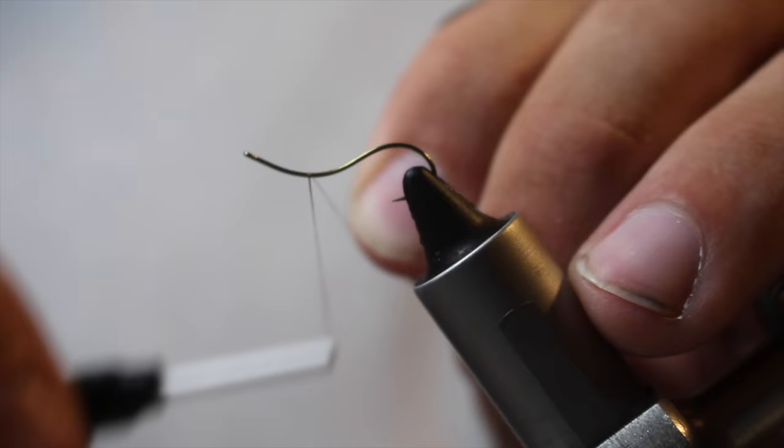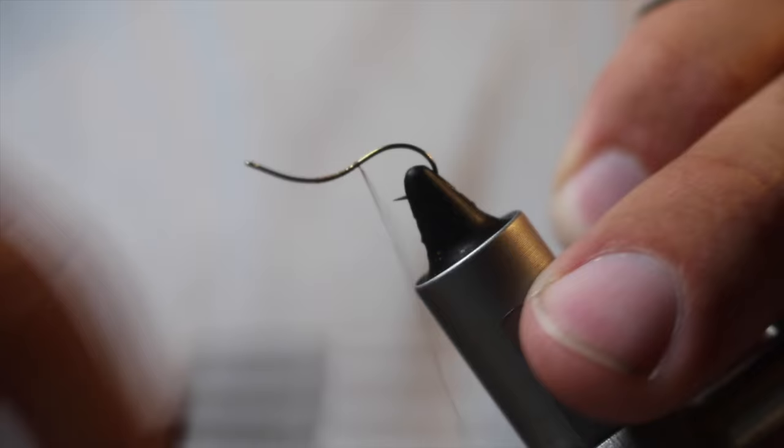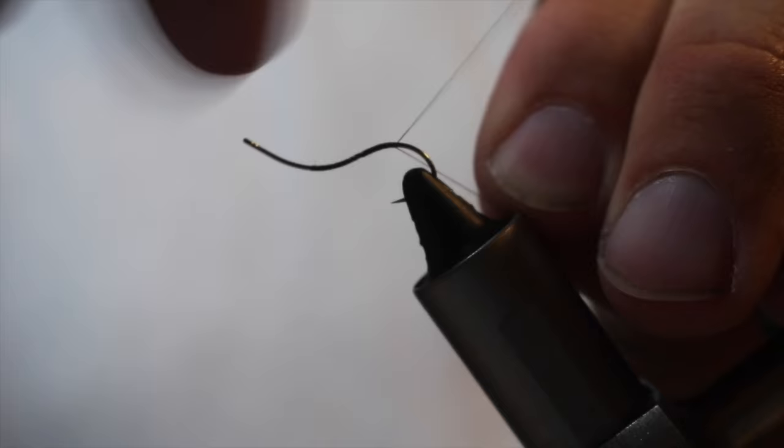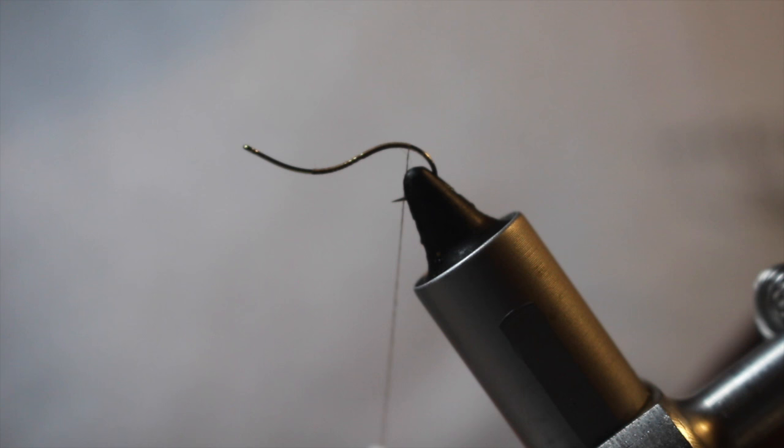So for this fly, I'm going to start just in the middle of the hook and start to work my way down. This is going to be a fairly quick fly to tie. It's a little more in depth than the caddis that we did last time, but the end result is going to look really good.